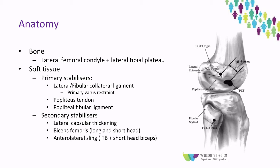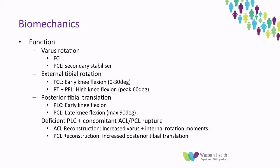These three structures are the primary stabilisers of the posterolateral corner. In terms of biomechanics, to varus stress, the lateral collateral is the primary restraint in all ranges of knee flexion, with the PCL acting as a secondary stabiliser when the posterolateral corner is deficient.